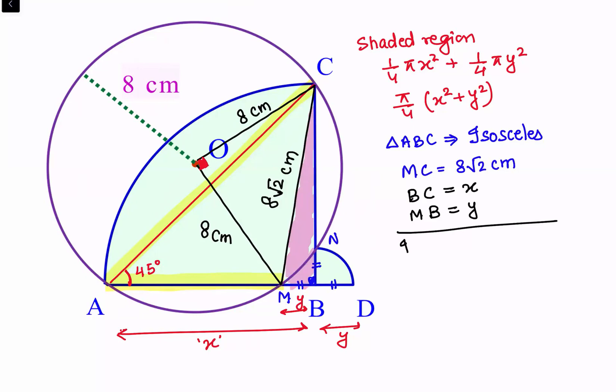In triangle MBC, by Pythagoras theorem, MC² equals MB² plus BC². Let's put the values: MC is 8√2, MB is y, and BC is x. So (8√2)² = x² + y², which gives us x² + y² = 128.